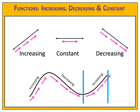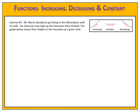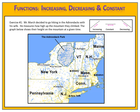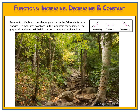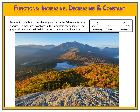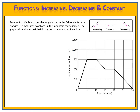Let's take a look at some examples so that we can understand increasing and decreasing a little bit more. In exercise one, Mr. March decides to go on a hike in the Adirondack Mountains with his wife. He measures how high up the mountain they climbed during their trip and created a graph to show their height on the mountain at a given time. The Adirondack Mountains are located in New York State — a beautiful large park with gorgeous hiking trails, beautiful waterfalls, and majestic views.